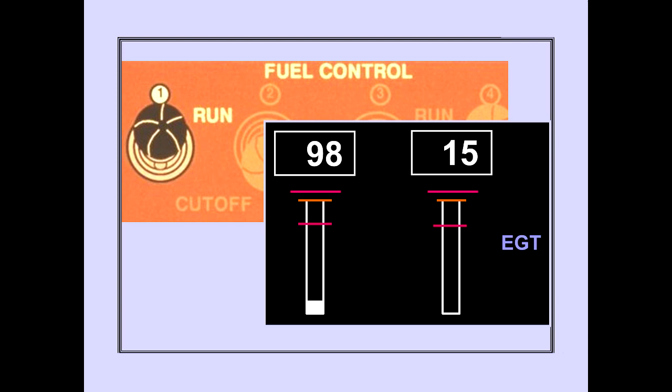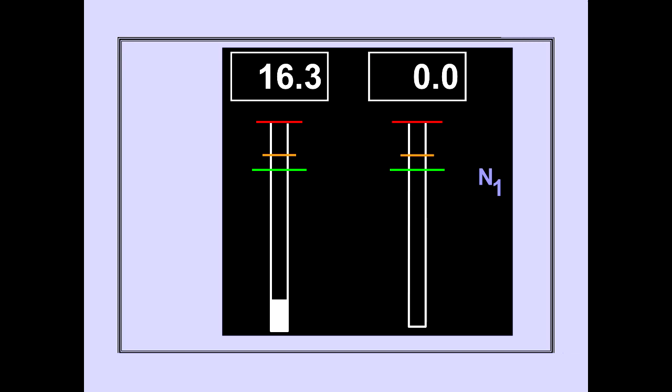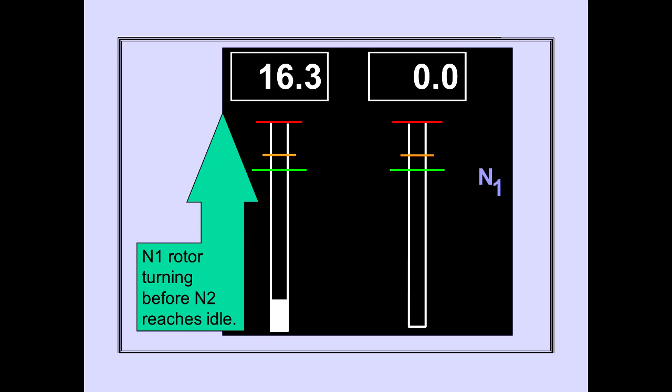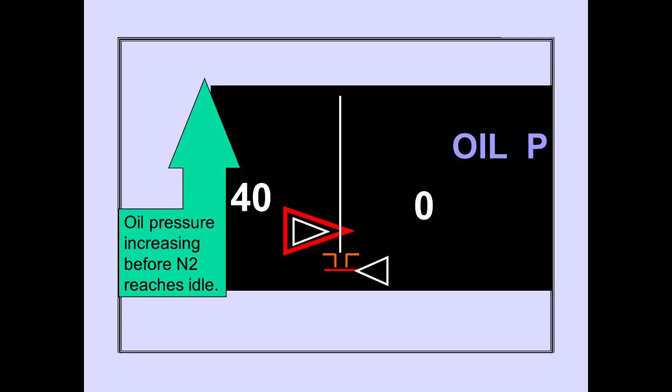When the fuel control switch is in run, EGT should increase within 25 seconds, indicating light off has occurred. EGT rise should stay within start limits. Before N2 RPM reaches idle, N1 RPM begins to increase, indicating that the N1 rotor is turning properly. Before N2 RPM reaches idle, oil pressure also begins to increase, indicating the oil system is operating and lubricating the engine.